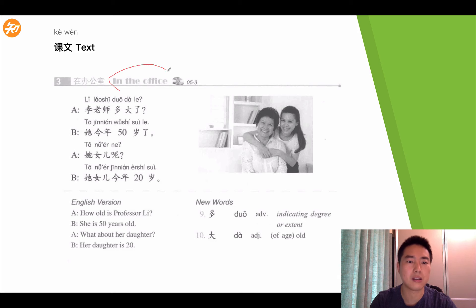This text happens there in the office, but this time, they're inquiring another person's age and another person's daughter. So it's not someone related to these two persons. Firstly, A asked B about 李老师多大了? 李老师 is teacher Li. 多大了 is how many years old? So, 李老师多大了? means how old is professor Li or how old is teacher Li? Then B answered, 她今年五十岁了。She is 50 years old now. She is 50 years old this year. Right?